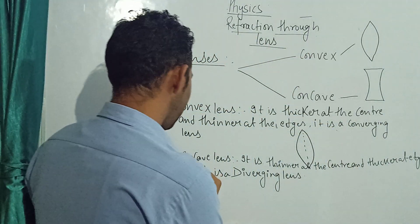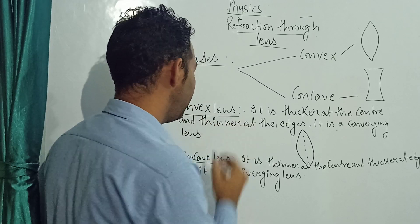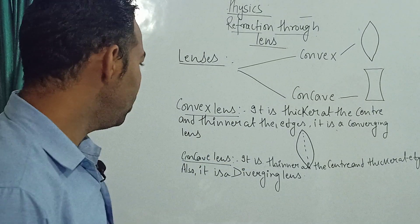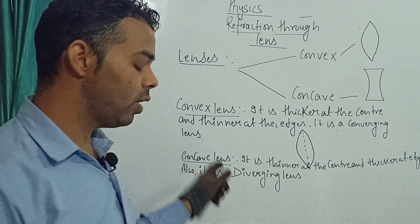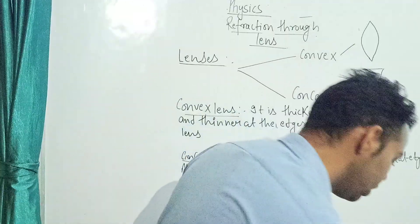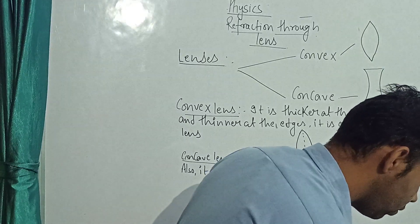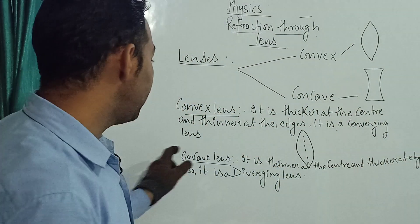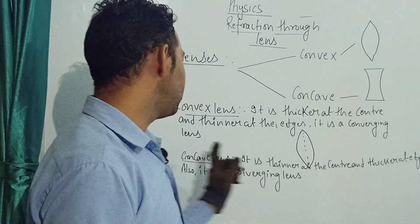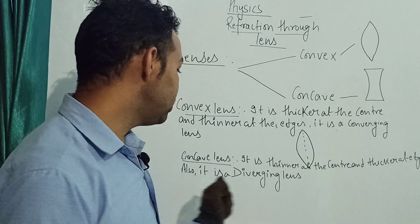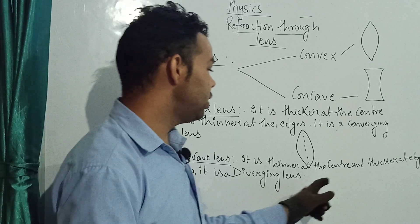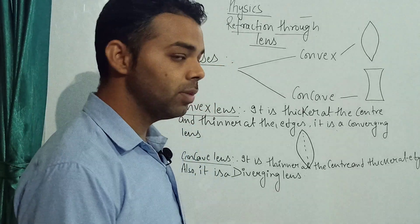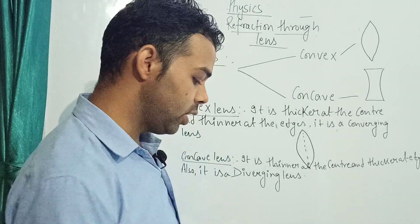So, to summarize: we are having two types of lenses, that is convex and concave. The convex lens is thicker at the center and thinner at the edges — it is a converging lens. The concave lens is thinner at the center and thicker at the edges — it is a diverging lens.